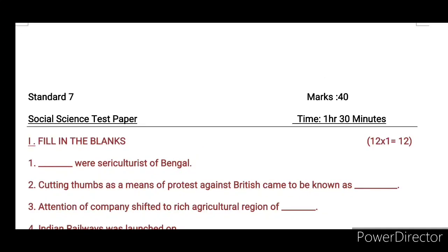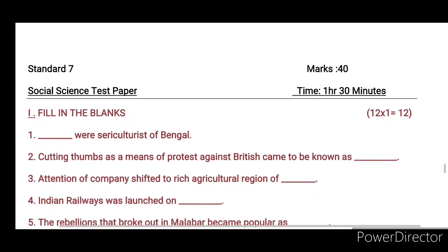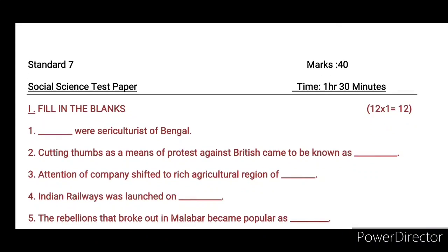Third one: attention of the company shifted to the rich agricultural region of dash. Fourth one: Indian railways was launched on dash. Fifth one: the rebellion that broke out in Malabar became popular as dash.